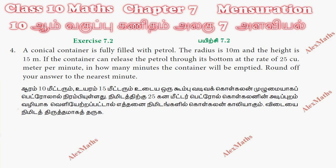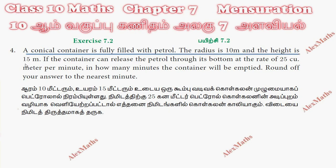Hi students, this is Alex here. XI 7.2, question number 4. A conical container is fully filled with petrol. The radius is 10 meters and the height is 15 meters.